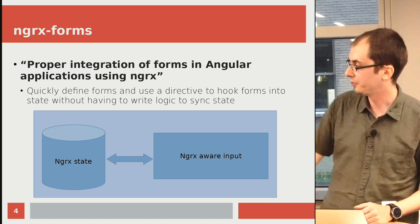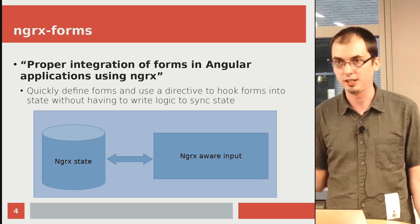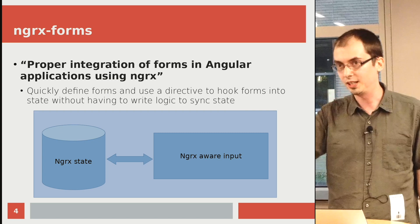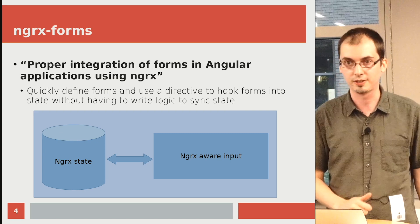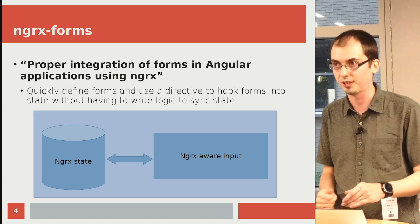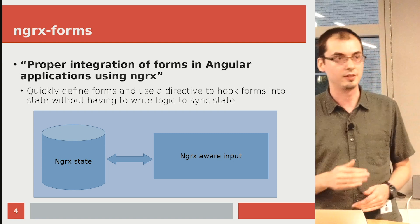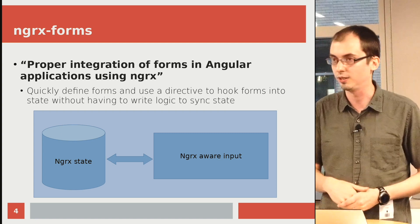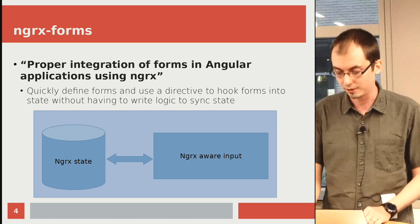The general flow is: you have a component with an input, and it's syncing back and forth with our state — dispatching an action when you type something, and that reducer is setting things like validation, perhaps detecting that your email is valid or invalid.